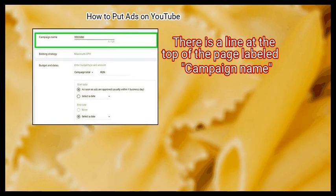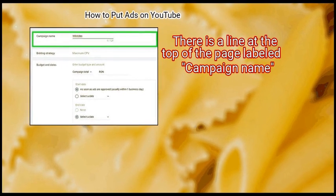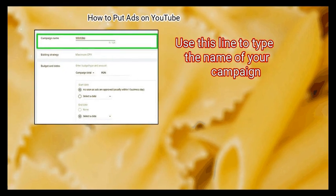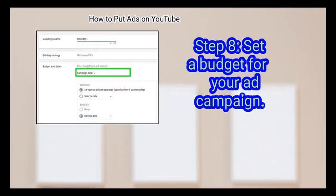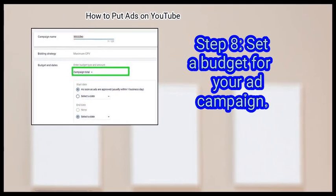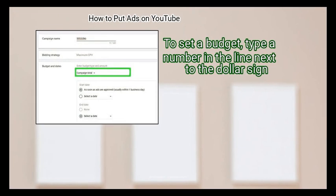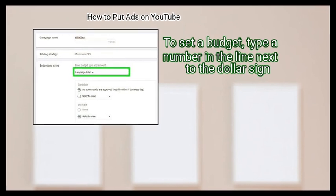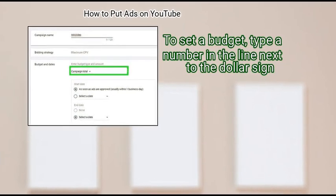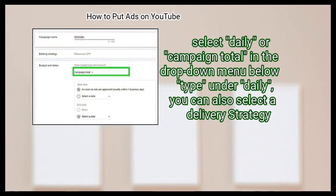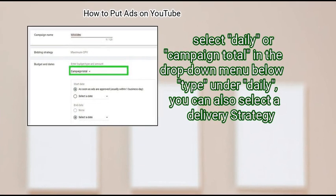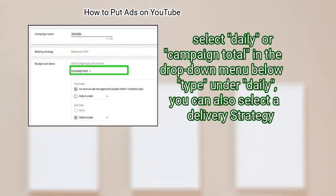Step 7: Type a name for the campaign. There is a line at the top of the page labeled 'Campaign Name' — use this line to type the name of your campaign. Step 8: Set a budget for your ad campaign. Type a number in the line next to the dollar sign, and select either daily or campaign total in the drop-down menu.